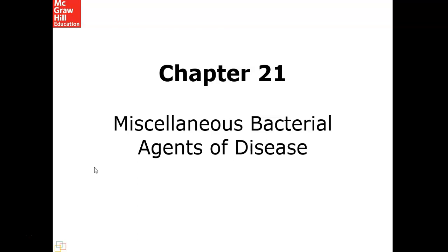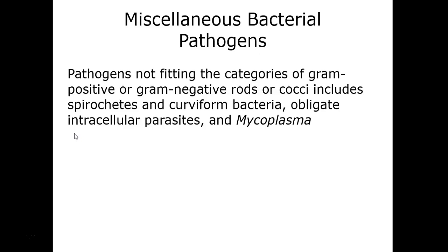Hello and welcome to the Chapter 21 lecture on the miscellaneous bacterial agents of disease. In this chapter, we will cover the spirochetes as our major group, and also some of the other non-typical bacterial forms, such as those that lack their cell walls like mycoplasma, which causes a form of pneumonia. Pathogens that don't fit typically into the gram-positive or gram-negative groups are the topic of discussion for this section.